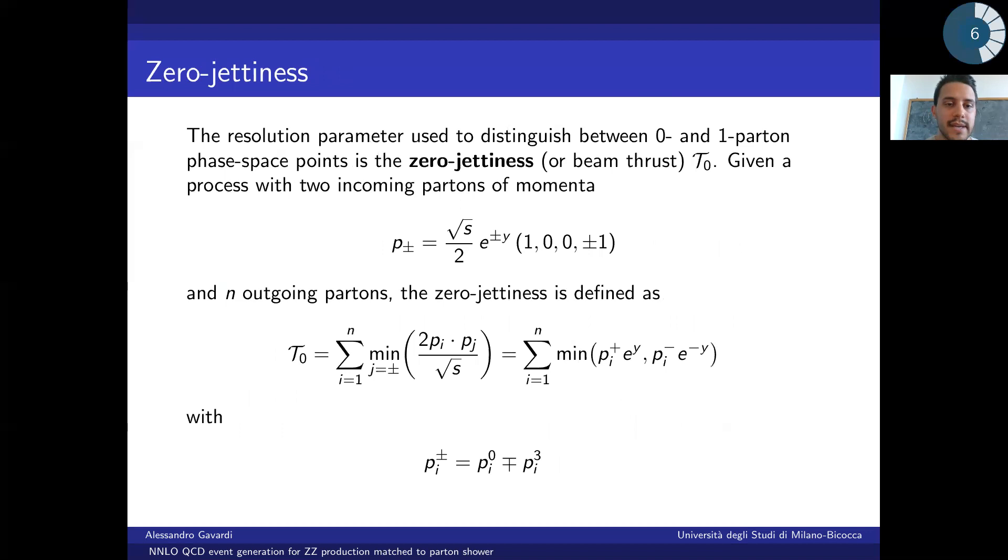Let's now give a more precise definition of what zero-jettiness is. As we can see from the second equation from this slide, zero-jettiness is defined as a sum over the final state partons, so that we can immediately see that phase-space points with no final state partons will have, by definition, tau0 equal to zero.